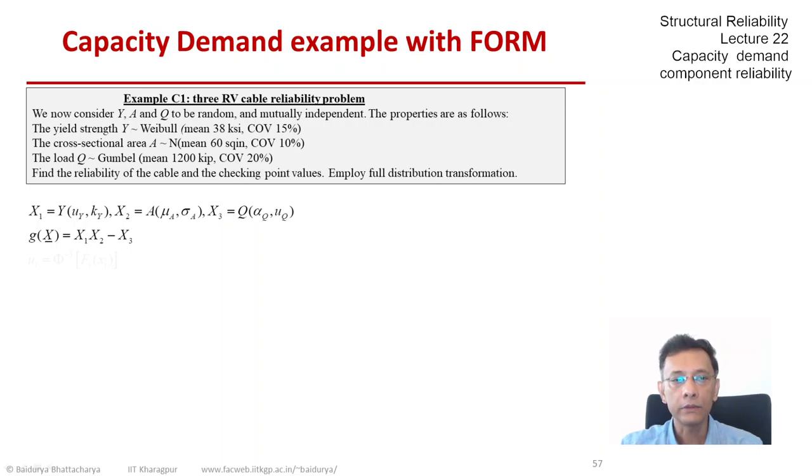As required, the distribution transformation is U is phi inverse of F of X. So that's for each of the X's, I going from 1 to 3. Basically, you can interpret this as phi of U is F of X. So that's a distribution wise equivalence. Now, if we wanted to find out H, express H in terms of U's and then find the minimum distance to that H equals 0.